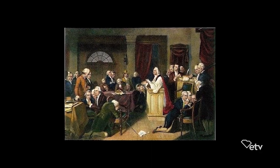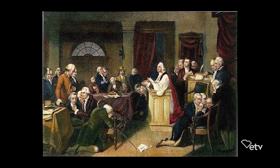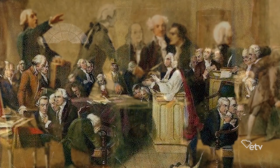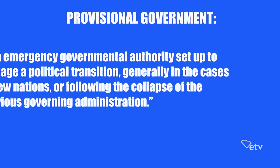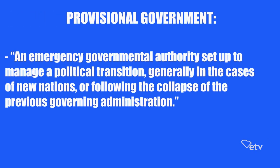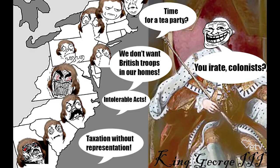Before America's independence, the American colonies were governed by the First, and later, the Second Continental Congresses, though these systems were merely provisional ones. A provisional government is a system formed in times of crisis, either during the rise of a new nation or the fall of the previous governing administration. In the case of the American colonies, the Continental Congress's formation was reactionary towards the dissatisfaction with King George III's policies.